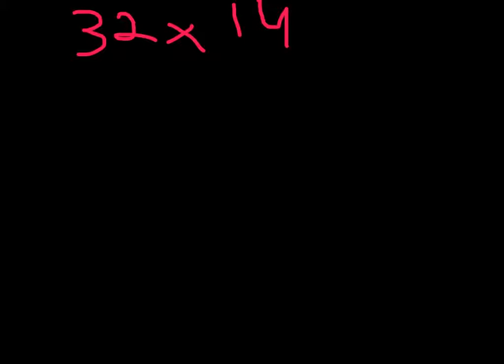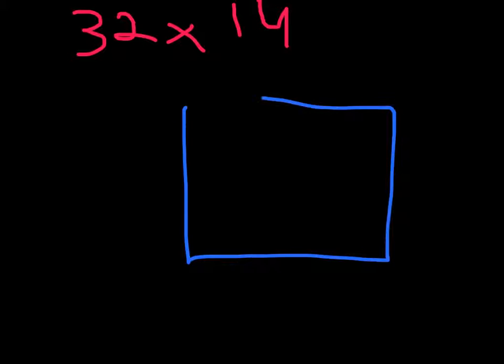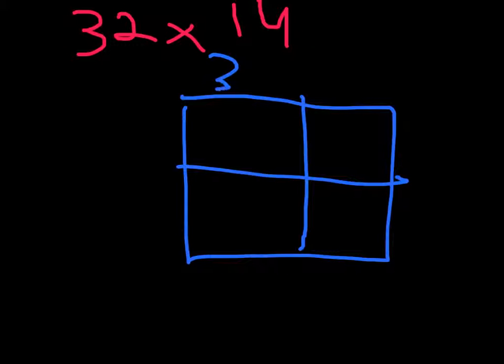First we have to draw a box. Then we put a 30 here, a 2 here, then a 10 here and a 4 here.